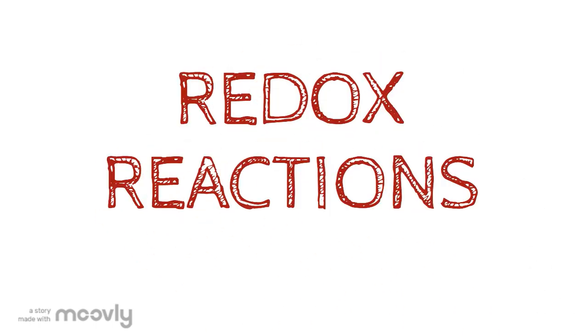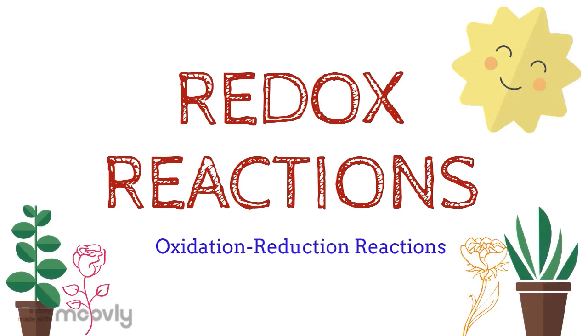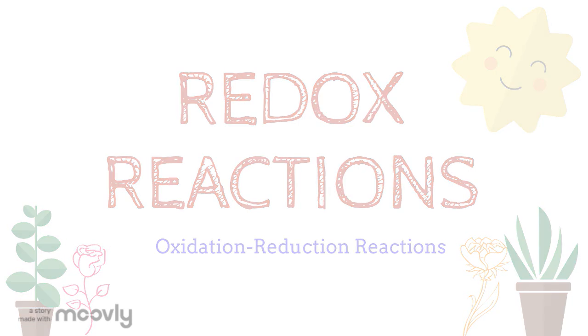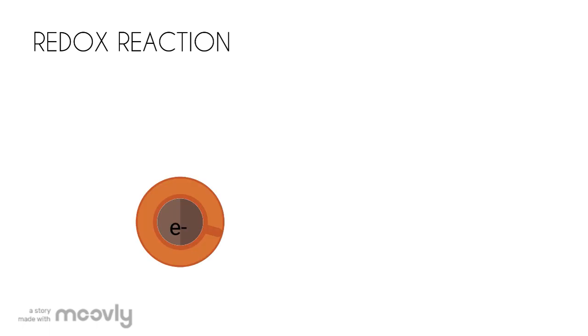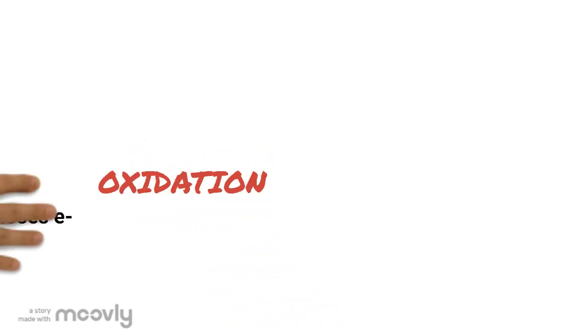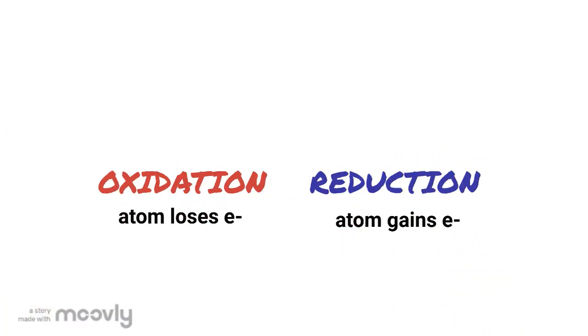In this video, we will be talking about redox reactions, or oxidation-reduction reactions, and their practical application to real life. Redox reactions involve the movement of electrons from one atom to another — one atom is losing electrons while the other is gaining them. Oxidation means the atom is losing electrons, while reduction means the atom is gaining electrons.